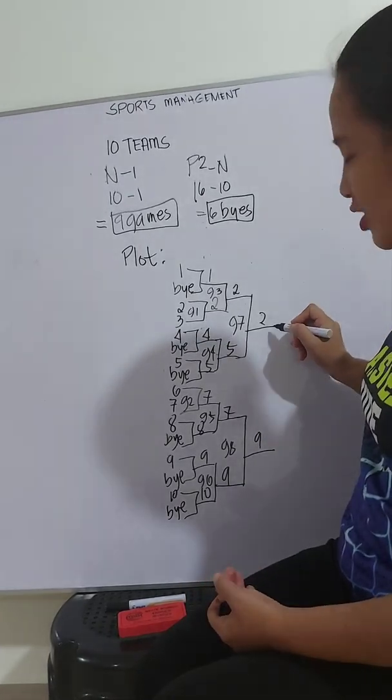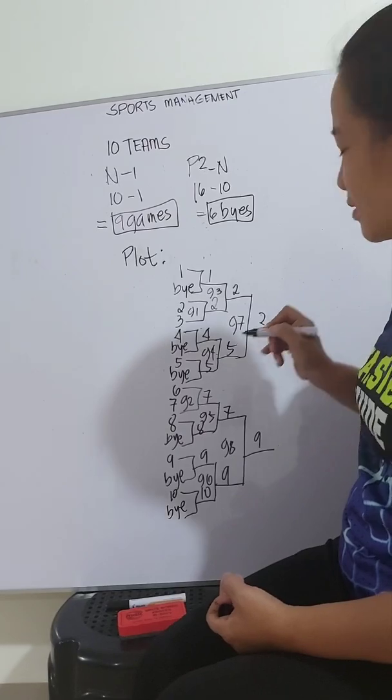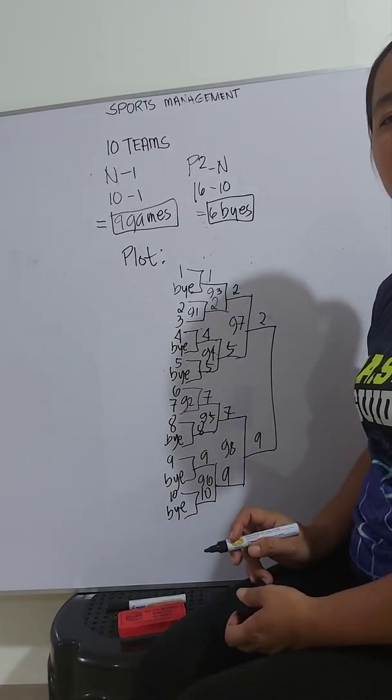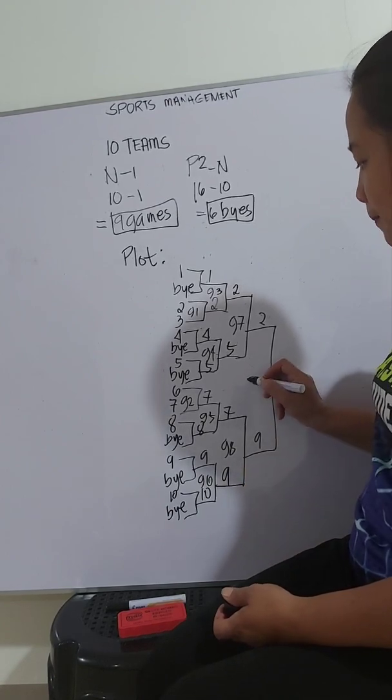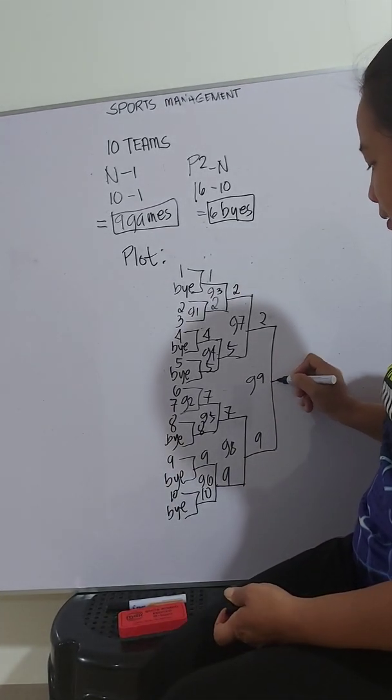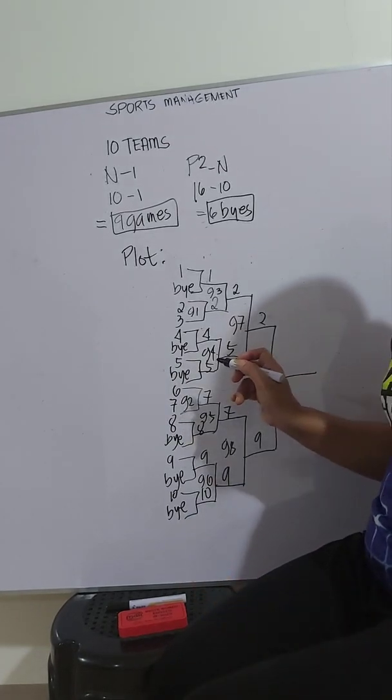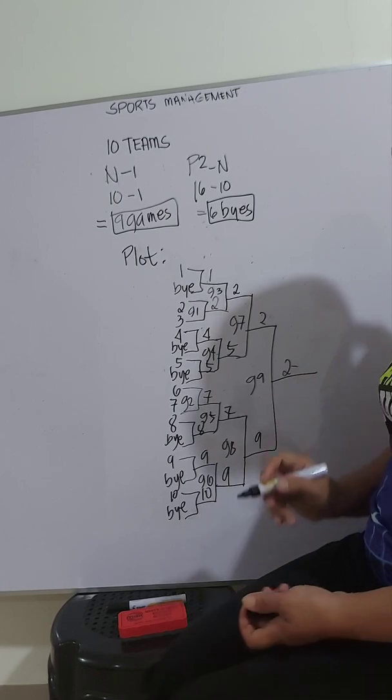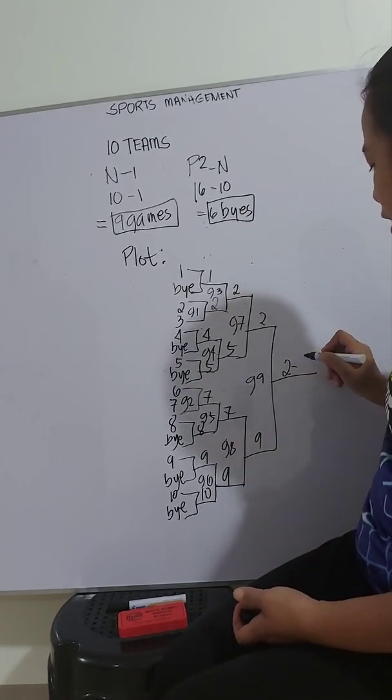And lastly, which is the championship match to be played between team 2 and team 9. This is our game 9. Let's say team 2 is the winner. In other words, team 2 is the champion.